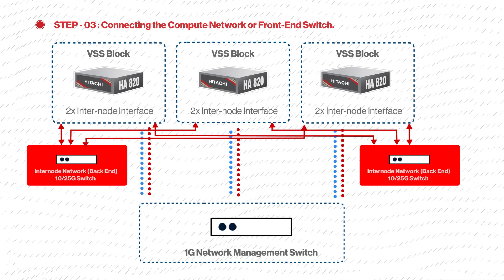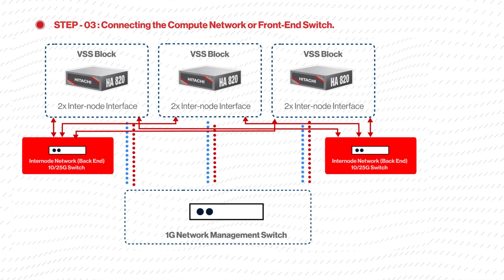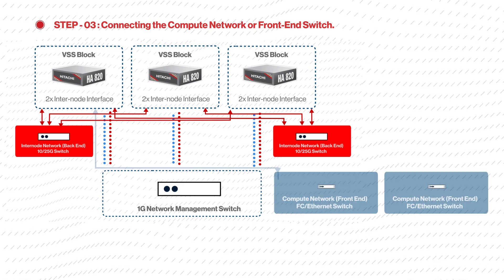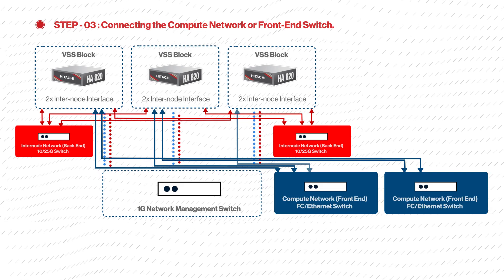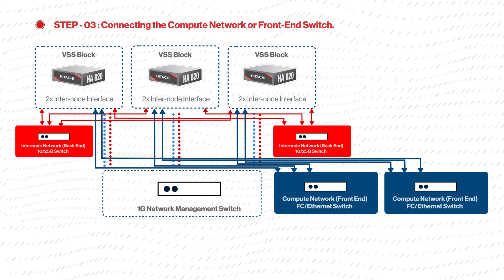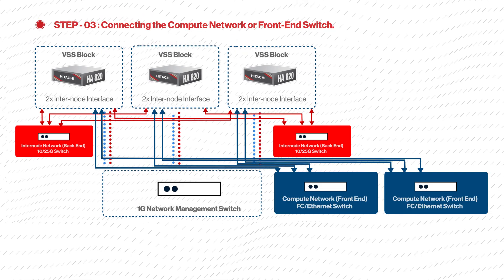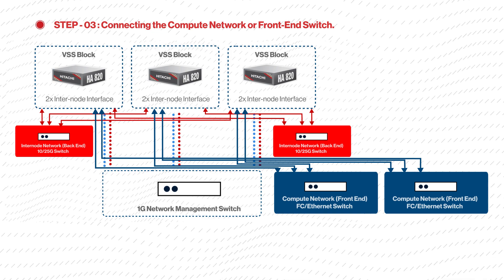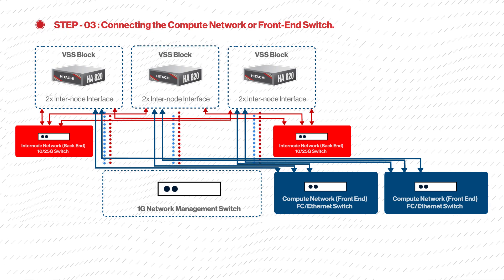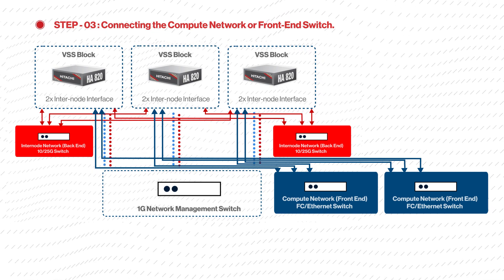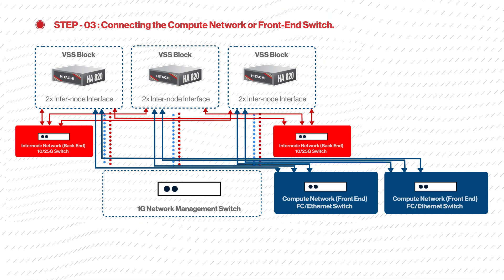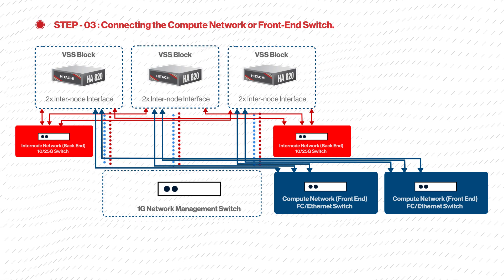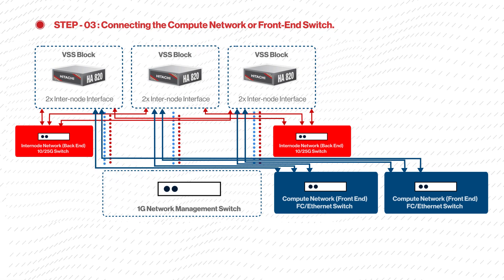Step 3: connecting the compute network or front-end switch. Now we connect each VSS Block node using the Ethernet or fiber channel ports to two Ethernet or fiber channel switches, with switch ports that are used as storage interface ports for the client.